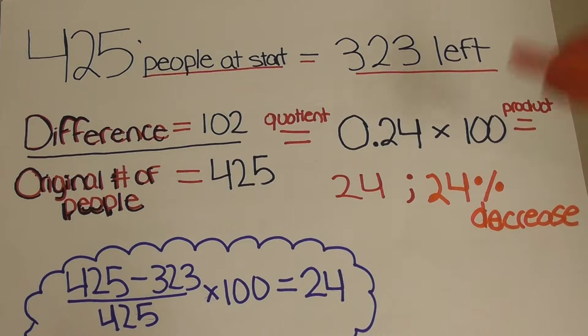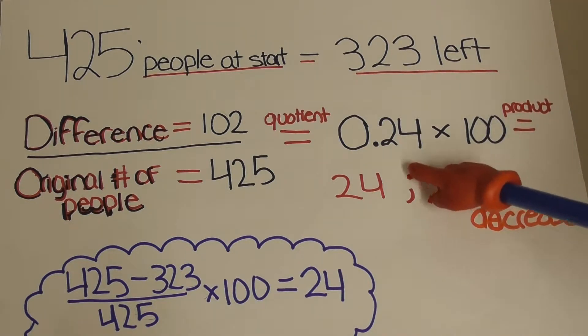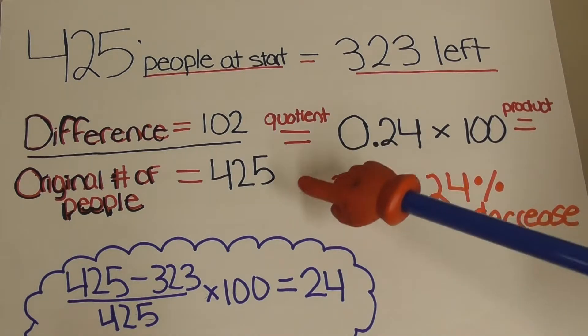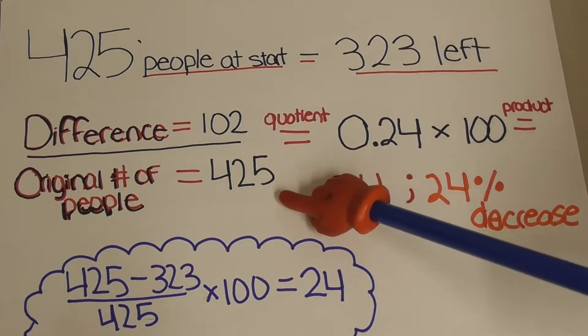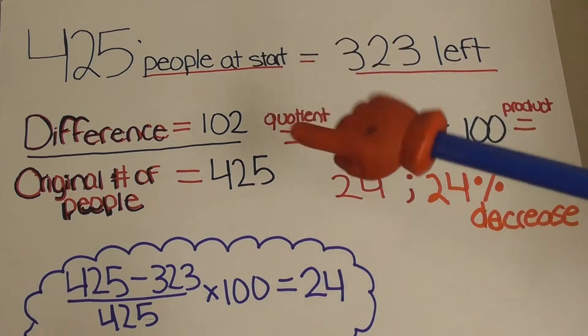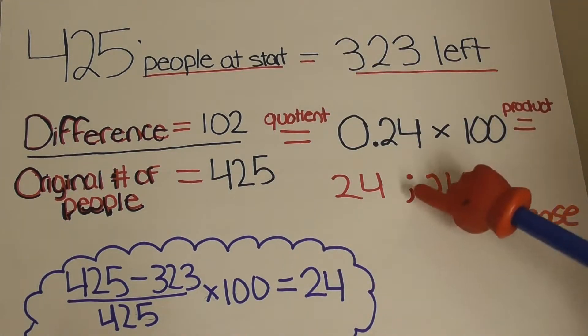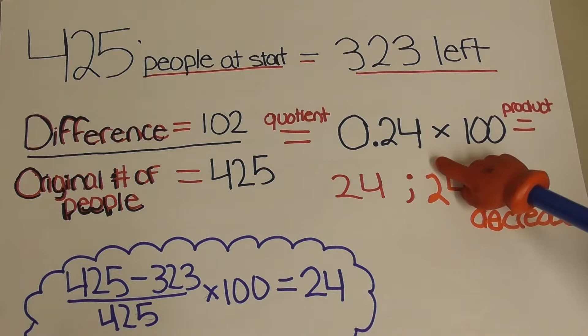Now you have to find the percentage of this number. To do this, you have to use the difference from the first step of 102 and divide that by the original number of people, which was 425. The quotient of 102 and 425 equals 0.24.